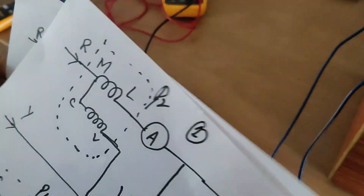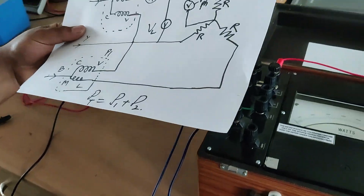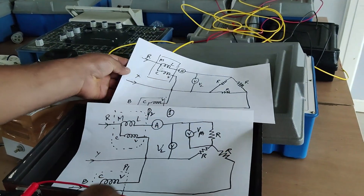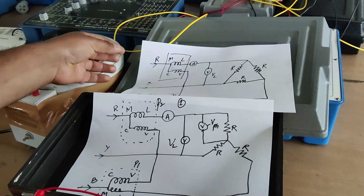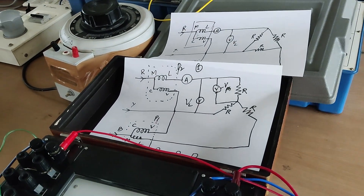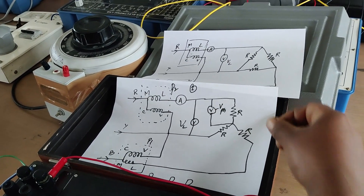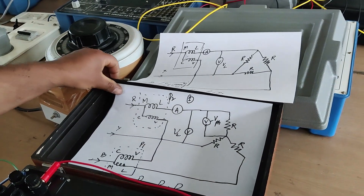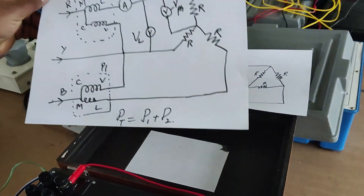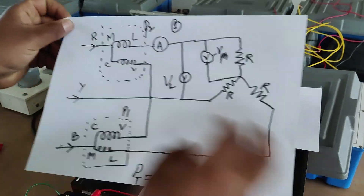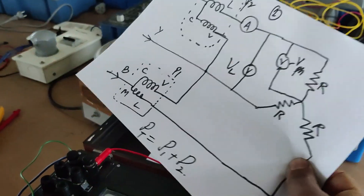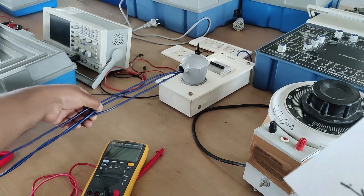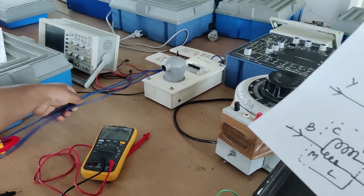We have to verify the amount of power consumed in star and in delta. The amount of power consumption for a given voltage and resistance in delta is three times as compared to star connected load bank. We will connect the three-phase power supply R, Y, B which is coming from here. We have a three-phase power supply available — it is not controllable, it is fixed at 400V line-to-line voltage.